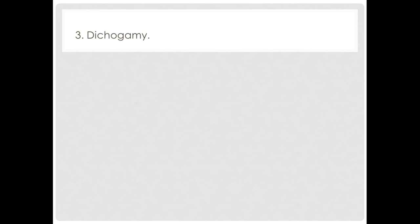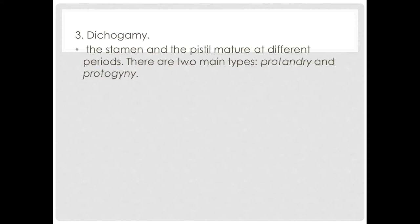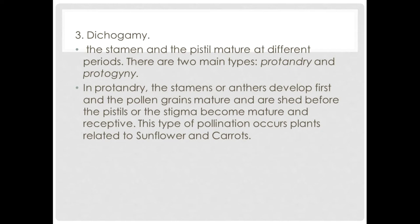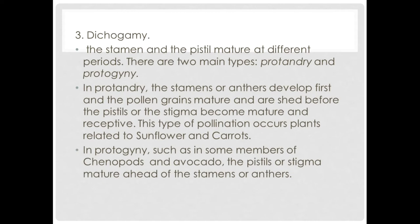Next we have dichogamy. In dichogamy, the stamen and the pistil mature at different periods, and there are two main types: protandry and protogyny. In protandry, the stamens or anthers develop first and the pollen grains mature and are shed before the pistils or stigma become mature and receptive. This type occurs in plants related to sunflowers and carrots. In protogyny, such as in some members of the chenopods and avocado, the pistils or stigma mature ahead of the stamens or anthers.